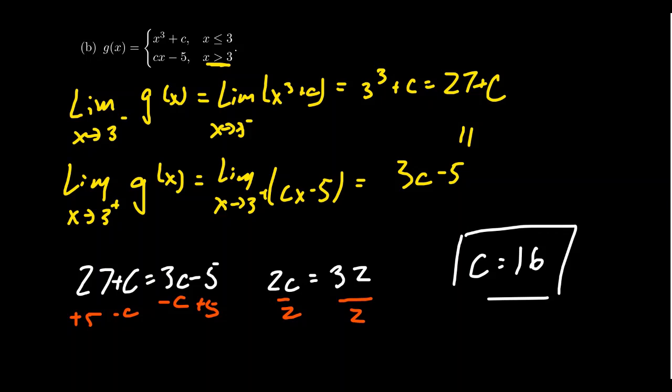This shows how we can find the constant to make a piecewise function continuous. But this is only for two pieces — what if you have three or four pieces? If you have three pieces, you'll need two unknowns, two constants, maybe called a and b. If you have four pieces, you'll need three unknowns. In these examples we solved linear equations, but you might have to solve a system of equations if there's more than one parameter.